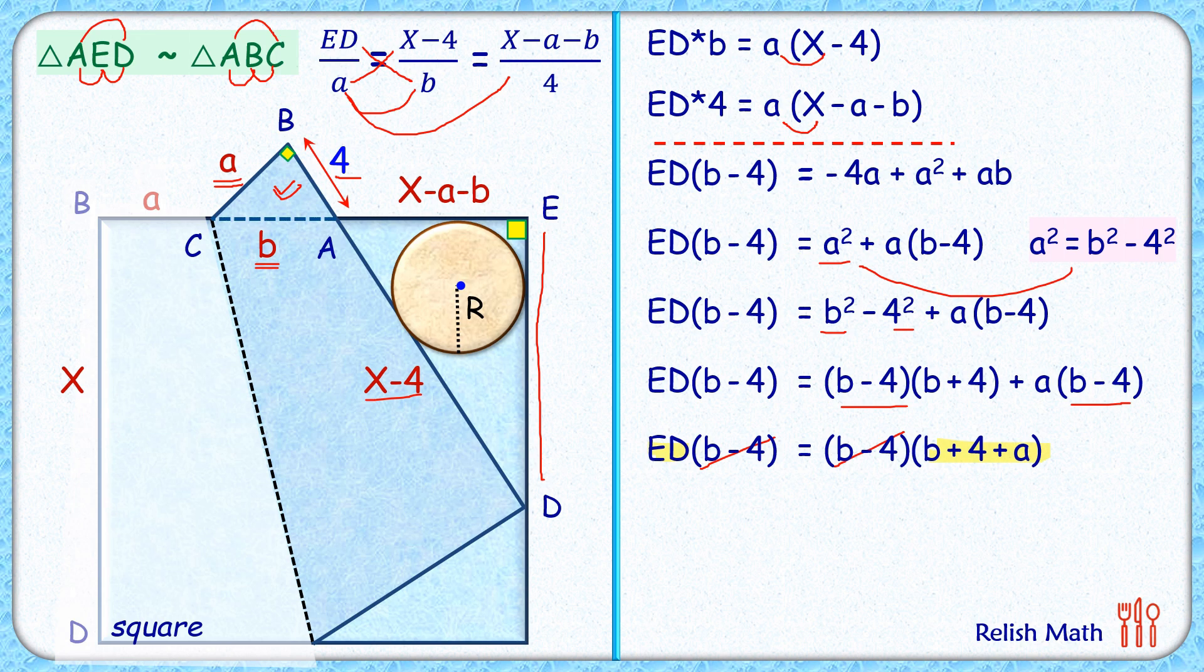Now here, using the formula of inradius for a right angle triangle, we'll get r = (AE + ED - AD) / 2. Here we'll put the values. AE is x - a - b. ED is what we have calculated here: b + 4 + a. And AD is x - 4.